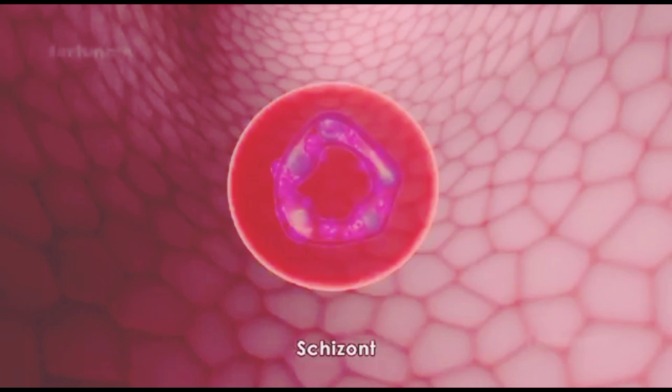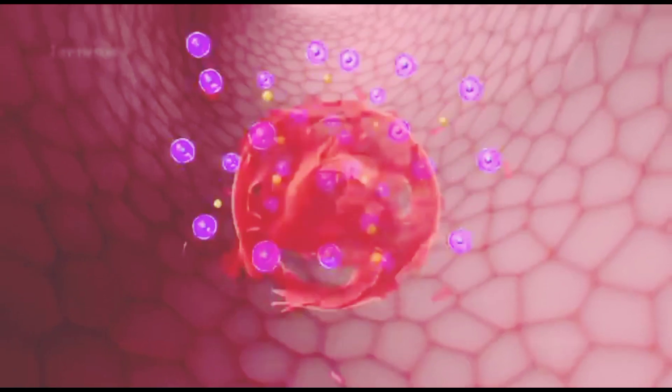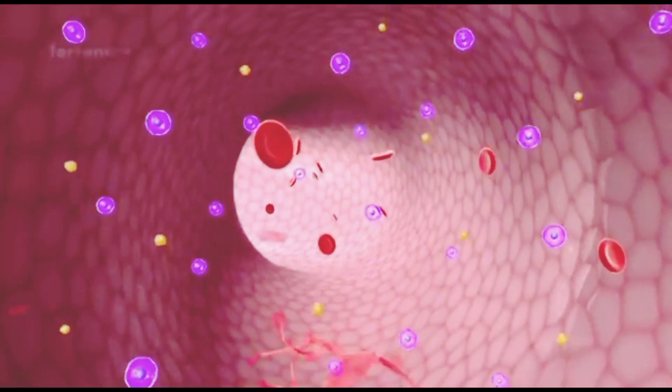The schizonts will produce numerous merozoites, which will rupture the red blood cells and attack fresh erythrocytes.